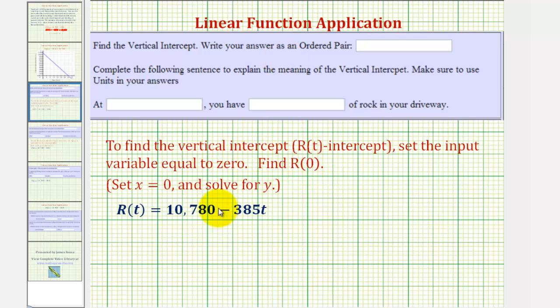If our linear equation is in terms of x and y, we would set the input variable x equal to zero and solve for y. But in our case, we want to find R(0), so we'll substitute zero for t.